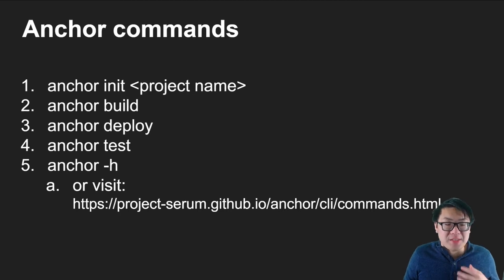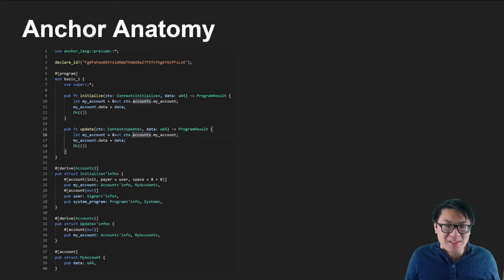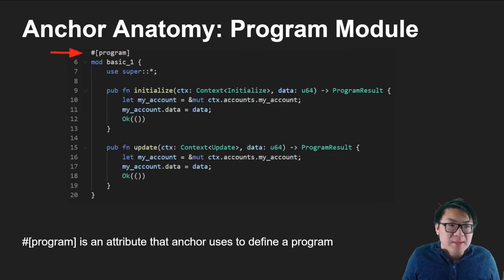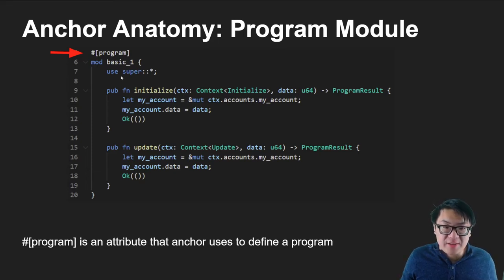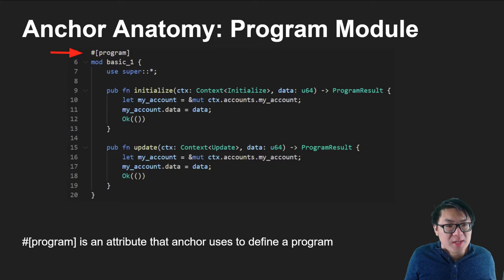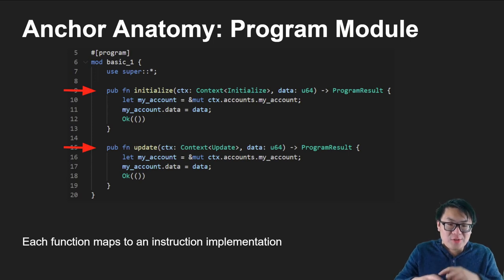Now that we know a bit about anchor commands, let's talk about how to write anchor code. We'll go over the basic one example. You can see there's roughly 40 lines of code — it's confusing, with a lot of attributes we don't understand yet. So let's break it down one by one. Let's first talk about the program module, which is mod basic_one. On the very top, you see the program annotation — this is what Anchor uses to define what a Solana smart contract or program is, handling background tasks to make things easier for us.